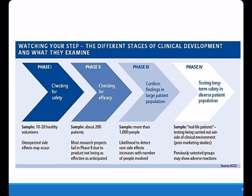This figure shows the several steps in clinical drug development. First, a Phase 1 clinical trial is needed to check for the safety of the drug and to evaluate unexpected side effects. The Phase 2 trial checks for the efficacy of the drug or therapy and requires about 200 patients. Most drugs that enter Phase 2 will not prove as effective as anticipated.